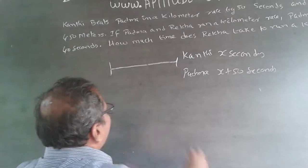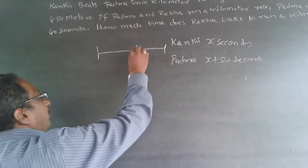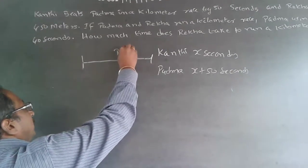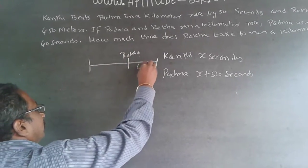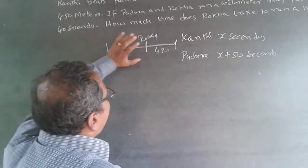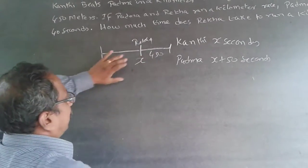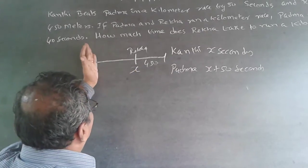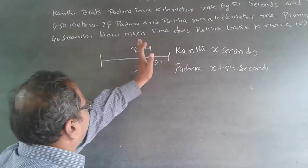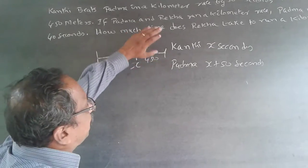When Kanthi is at the finish line, Rekha will be somewhere behind with 450 meters still remaining. They started together, and Kanthi has taken X seconds to reach the finish. When the time is X seconds, Rekha is still 450 meters away from the finish.